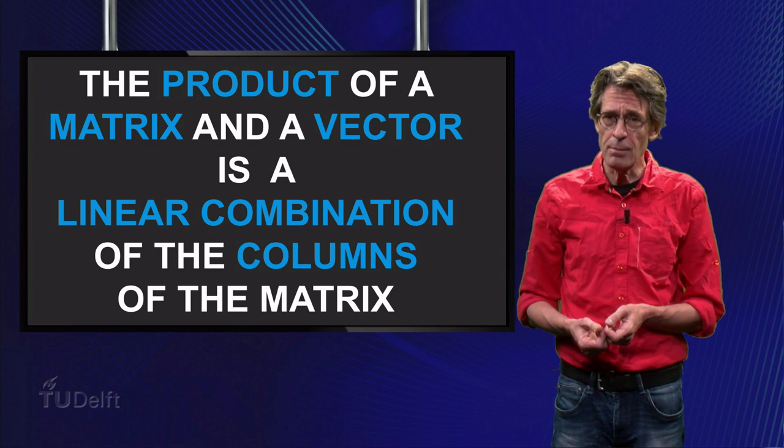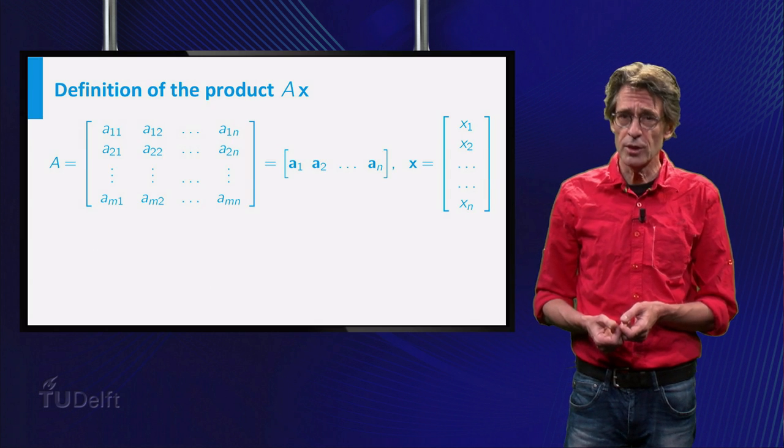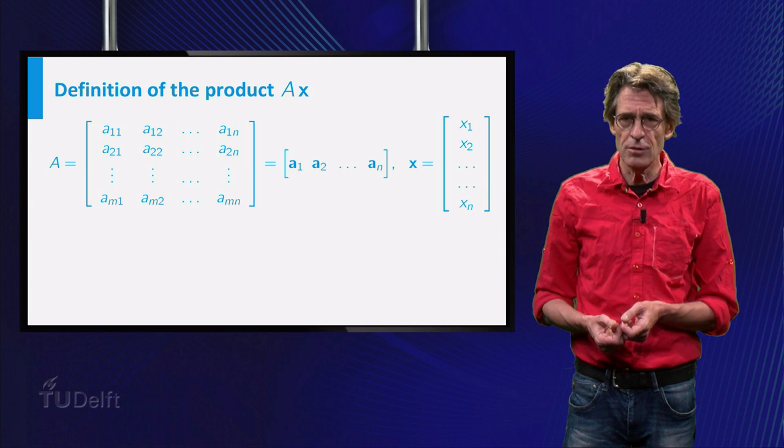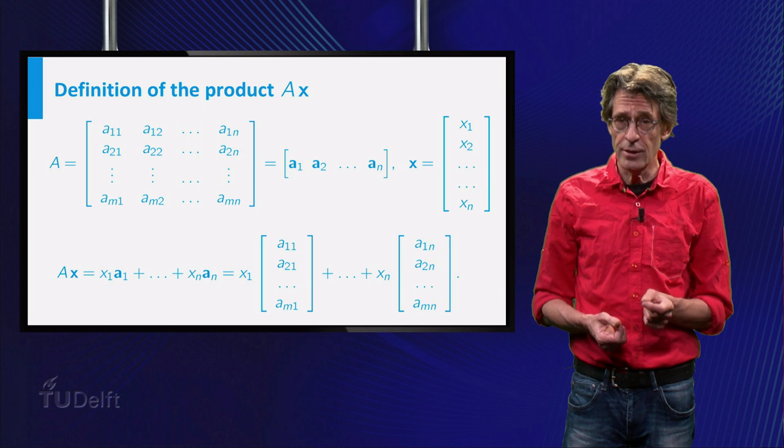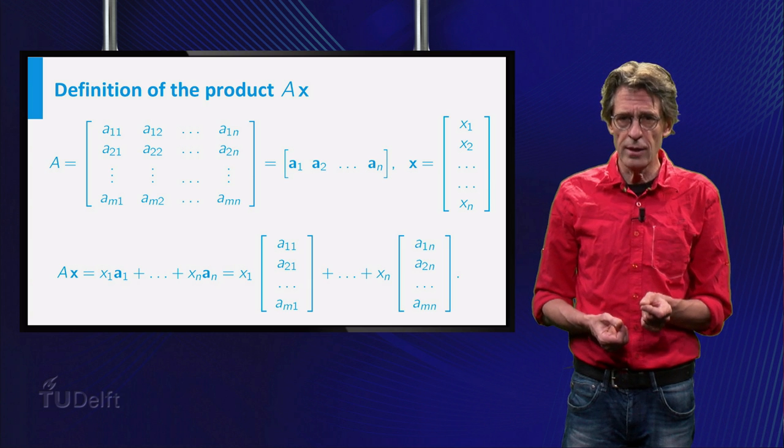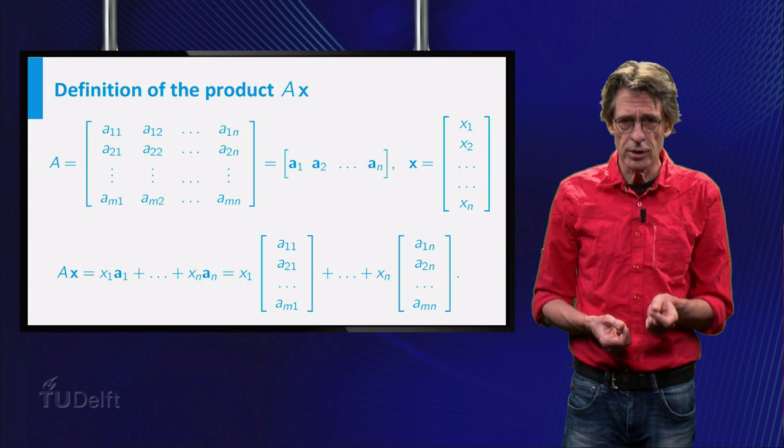If A is an n by n matrix with columns a1 up to an, and x is a vector in Rn, then A times x is the linear combination of the columns of A with the elements of the vector x as coefficients.